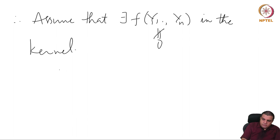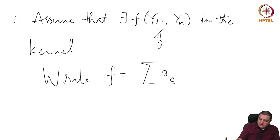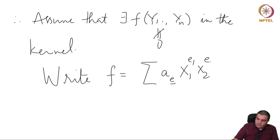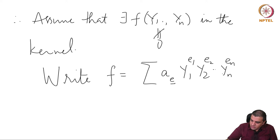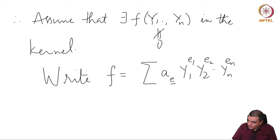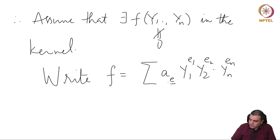The idea is again to change coordinates so that f takes the form of a monic polynomial. That would introduce a relation of yn over some combination of the earlier ones, not necessarily the earlier y's. So suppose we write f as a sum of coefficients alpha_e indexed by some n-tuple e = (e1, ..., en), where the variables are y1 through yn.